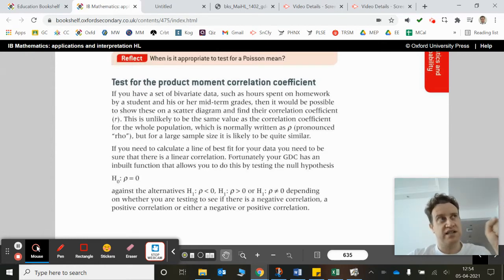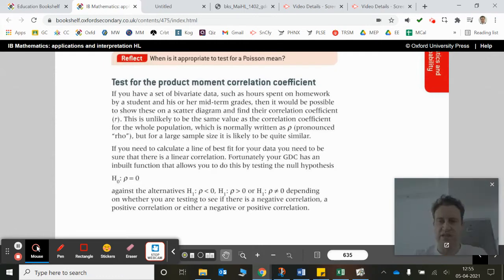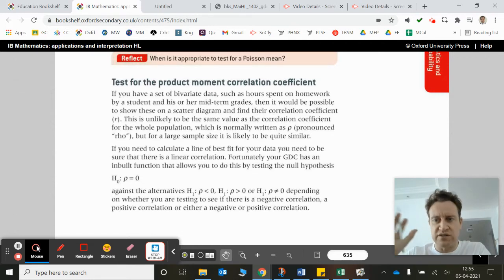Now we're coming into the test for the product moment correlation coefficient. So we are testing to see whether any linear correlation that we find is significant. We're looking at linear correlation, and obviously that can be between minus one and one. That's the PMCC or the R value that's given, and whether or not it's significant will depend on the size of the sample.